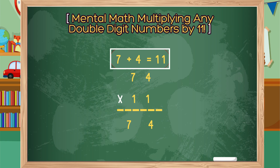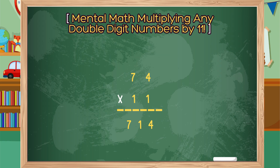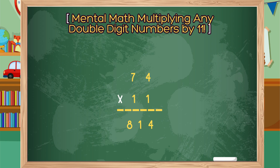Step 3: Insert the 1 into the sum between the 7 and the 4 in the product, and then carry the 1 to the 7 in the product. Add 1 plus 7, which equals 8. Your answer is 814.